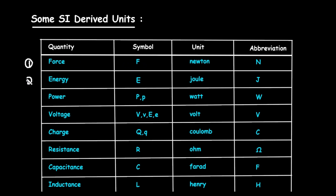Number two is energy. Energy is represented by symbol capital E. The unit of energy is joule, and joule can be written as capital J.